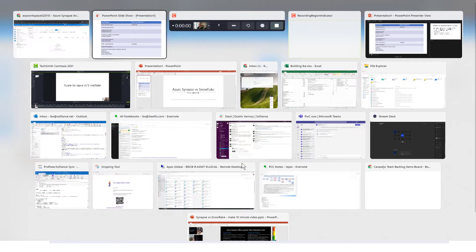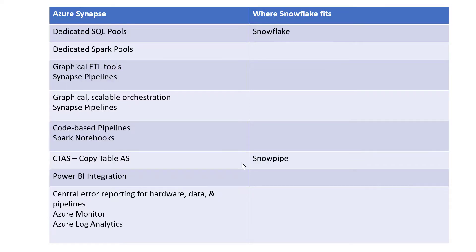So why do I mention all of this? It's because if we go back to this list, really Snowflake is only compared to dedicated SQL pools. Snowflake is primarily a relational engine that separates storage from analytical processing and scales out the compute, while keeping storage relatively affordable — but the compute can get rather expensive. That's very similar in model to a dedicated SQL pool in Synapse.